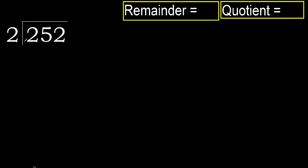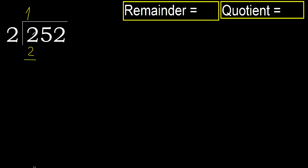252 divided by 2. 2 is not less, therefore 2 multiplied by which number is nearest to 2, but not greater? 2 multiplied by 2 is 4, which is greater. Multiplied by 1 is 2, which is not greater. Ok, subtract 0.